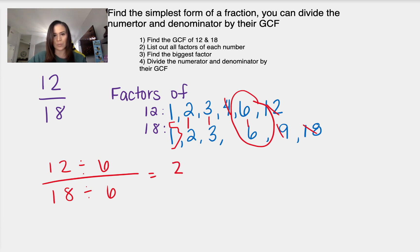So 12 divided by 6 is 2. 18 divided by 6 is 3. So 12 eighteenths in our simplest form is equal to 2 thirds and there you have it.